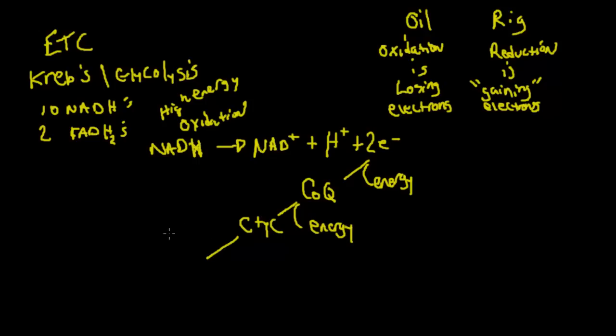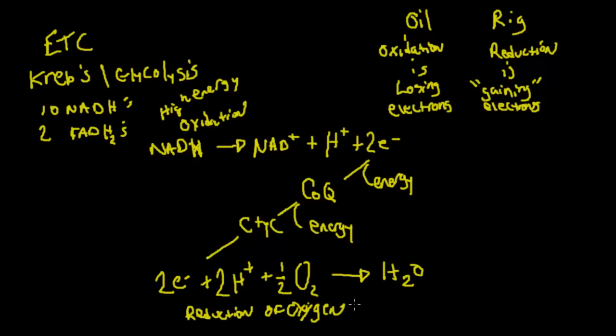Cytochrome C here. We're going to have an energy release. And we're going to take that down. And we're going to have two electrons plus two hydrogen protons plus one-half oxygen. I'm saying one-half because we've got O2 here. And that's going to lead to the reduction of oxygen to water. So we're going to draw in water there. So this is the reduction of oxygen to water.